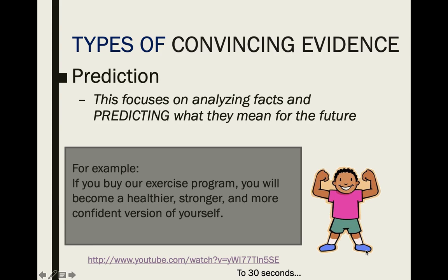The first type of convincing evidence is prediction. Prediction focuses on analyzing facts and predicting what they mean for the future — this isn't happening, this is saying what will happen. For example: if you buy our exercise program you will become a healthier, stronger, and more confident version of yourself. That 'you will' is saying this will happen. Now, could you buy that exercise program, still sit on the couch, eat cheesecake, and never become healthier, stronger, or more confident? Absolutely. So prediction is great because it's saying it will or is most likely happen, but there is no guarantee.